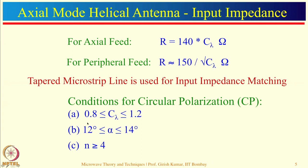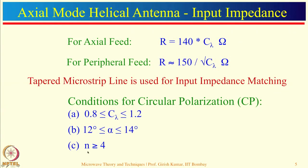There are three conditions to obtain circular polarization using a helical antenna. Condition one: C_lambda should be between 0.8 to 1.2, which gives a bandwidth of approximately 40 percent — axial mode helical antenna gives very large bandwidth. Typical value of alpha should be between 12 to 14 degrees, and it is recommended that N is greater than 4. Also, the diameter of the axial mode helical antenna is not very important; performance is very little affected by wire diameter.